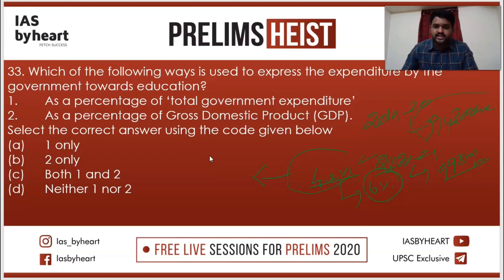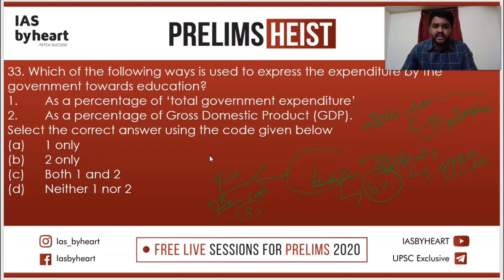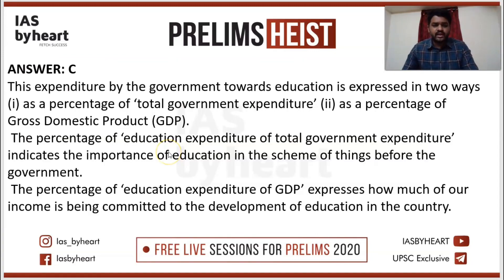In 2020-21, the education spending as a percentage of GDP is 4.2%. The efficiency of education spending is around 91%, meaning out of 100 rupees, 91 rupees are spent effectively for the promotion of education, and only 9% is wasted. Education expenditure may be expressed as a percentage of total government expenditure, and also as a percentage of GDP — both are correct statements. So answer is C: expenditure on education is expressed in two ways — as a percentage of total government expenditure and as a percentage of GDP.